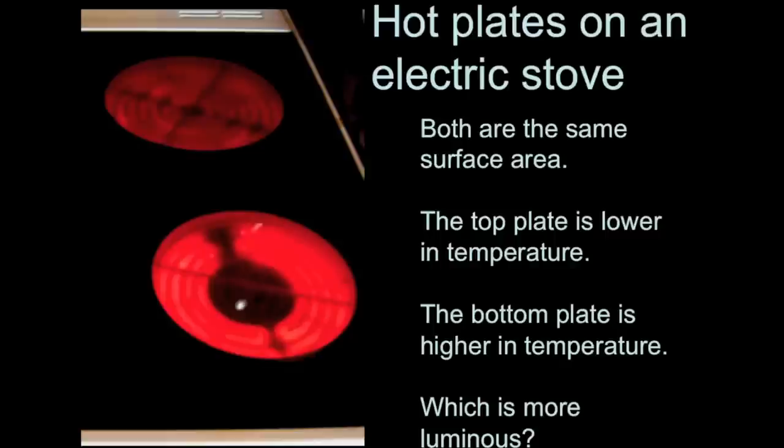Well, the bottom one has to be more luminous. For two things to have the same surface area, but one of them to be hotter, the hotter one has to be more luminous. And in this case, you can actually see the difference.